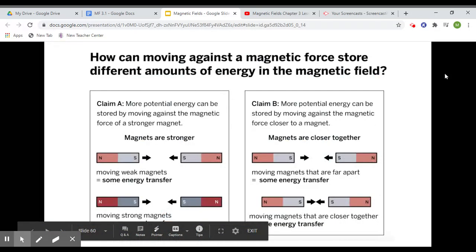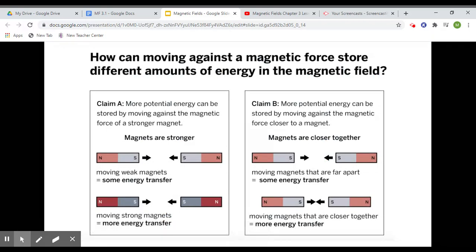This is just a visual of what we're trying to figure out today. We have two claims, Claim A and Claim B. Claim A says more potential energy can be stored by moving against the magnetic force of a stronger magnet.